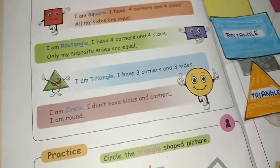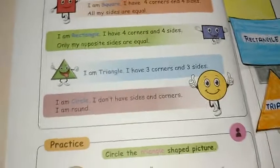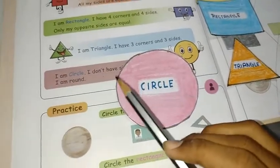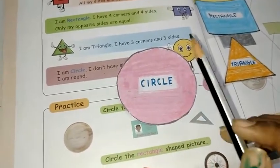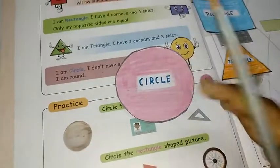And circle. I don't have sides and corners. I am round. Yes, circle is a round object and it doesn't have any corners and any sides.